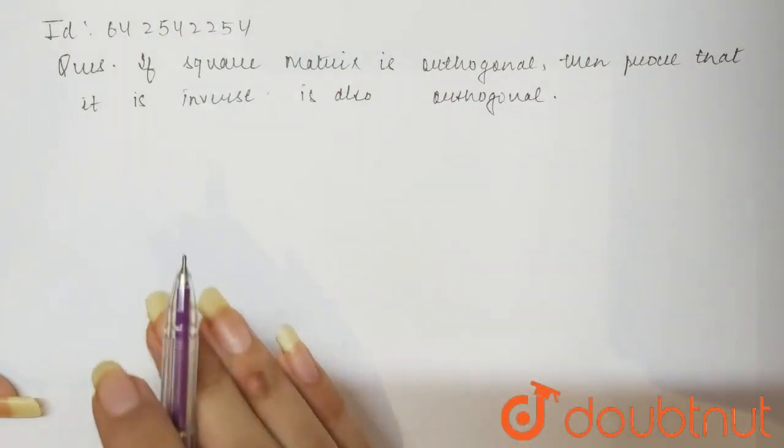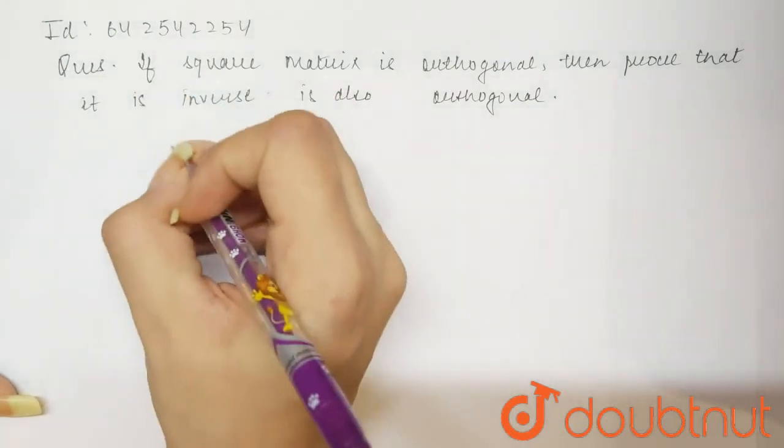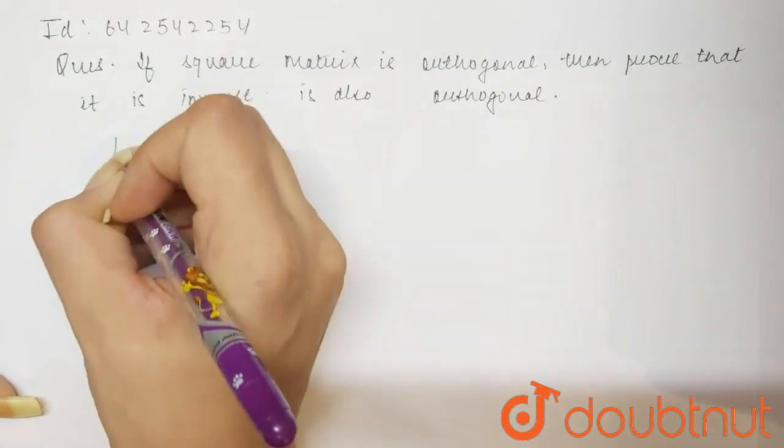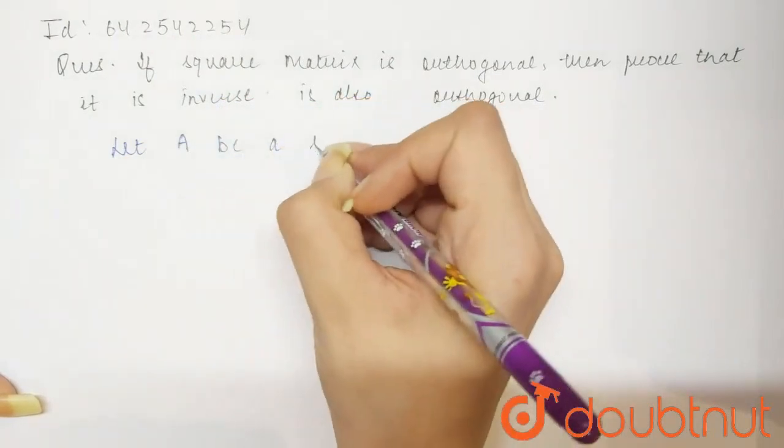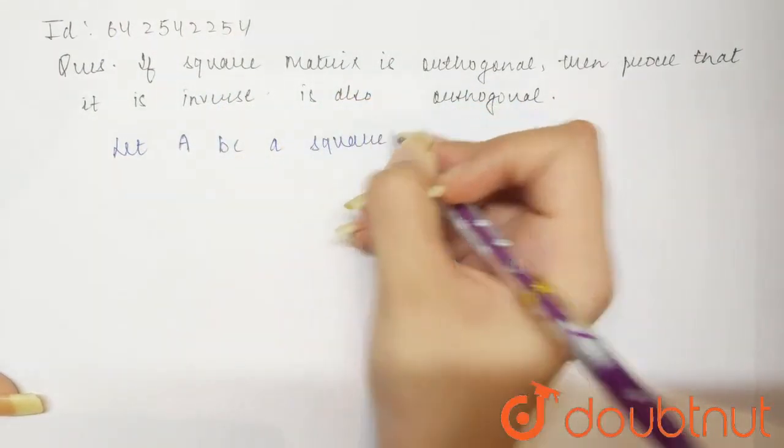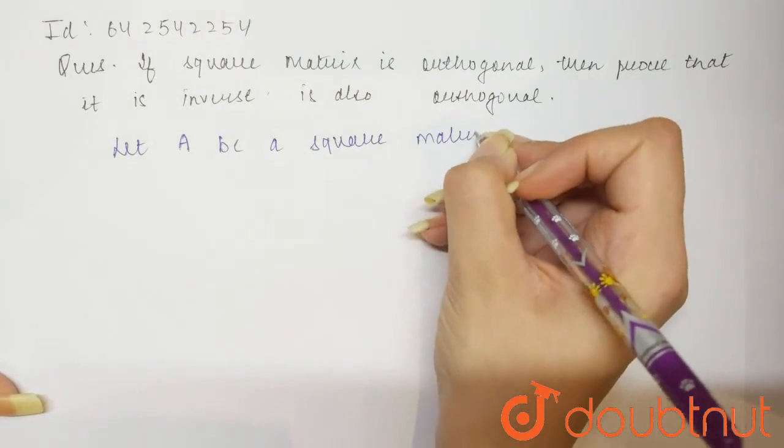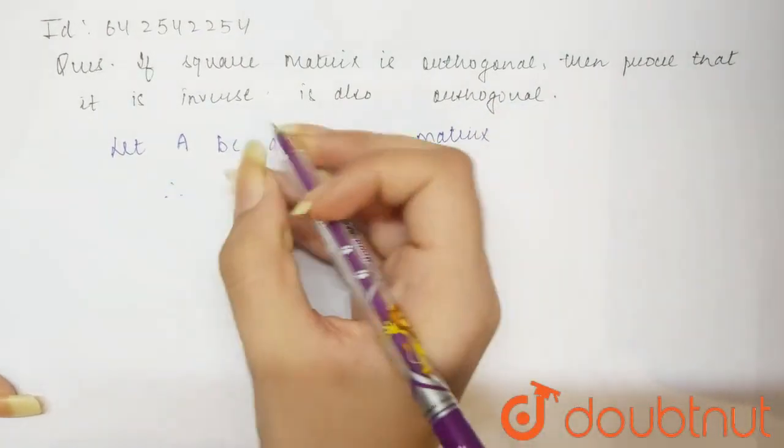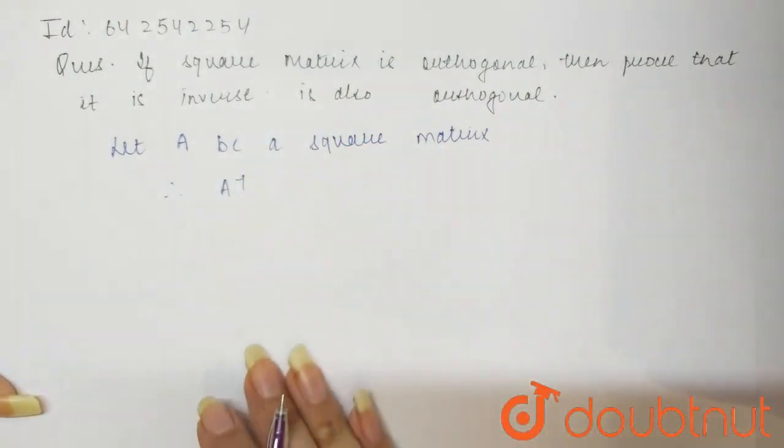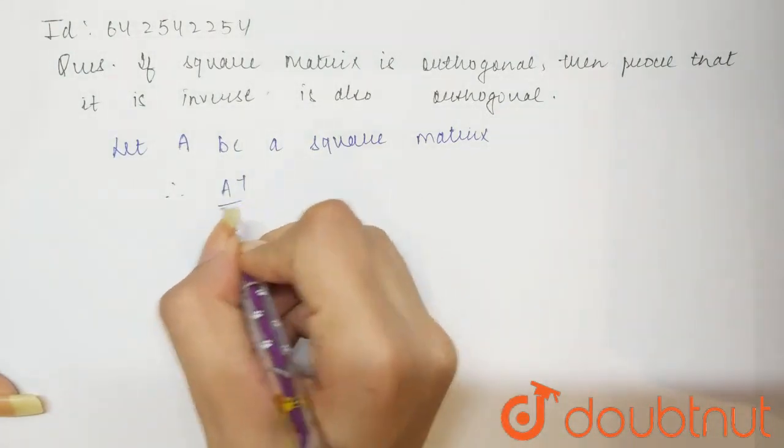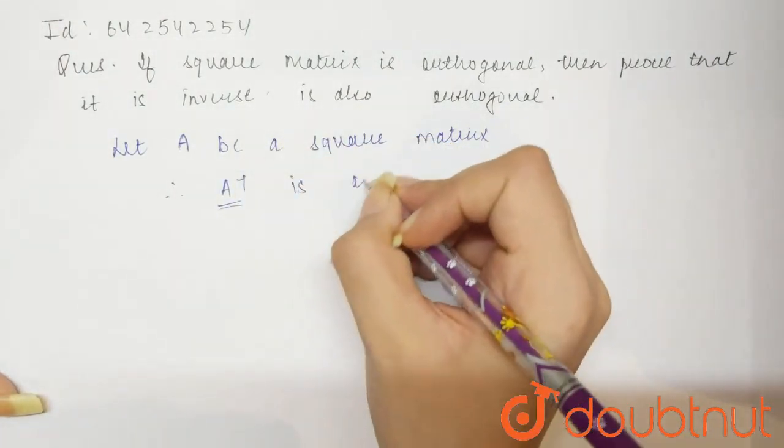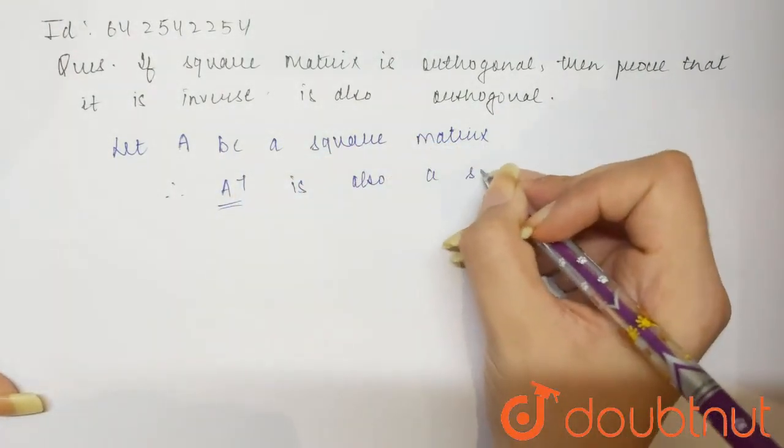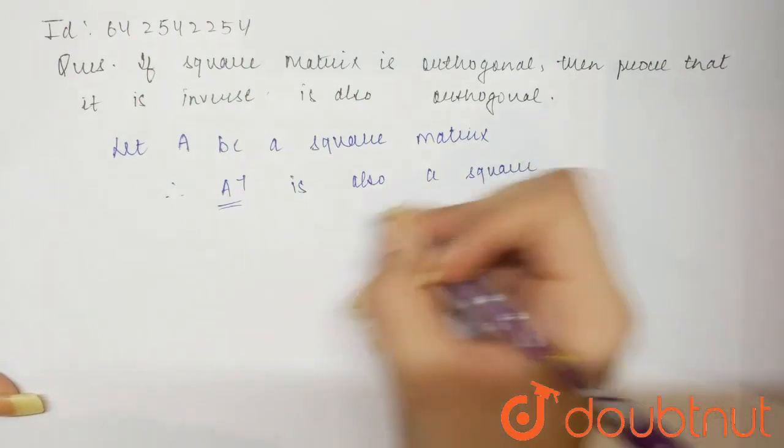Now see, we will take a square matrix A. So we will say, let A be a square matrix. Now, what will be the transpose of this matrix? Therefore, A transpose will be A inverse. This is also a square matrix.